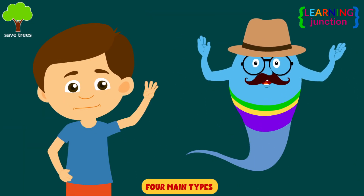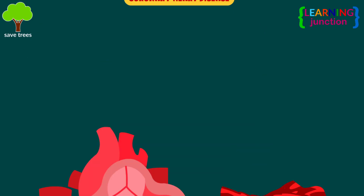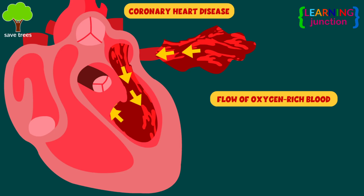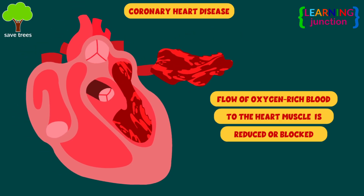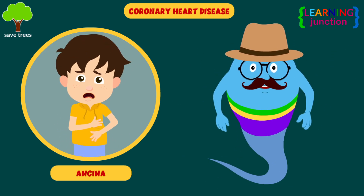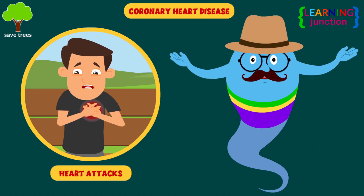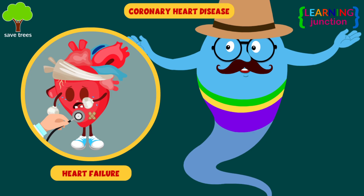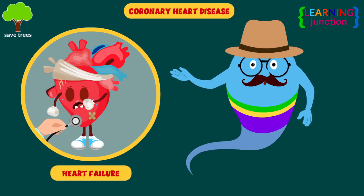There are four main types of heart disease, let's learn about them one by one. Coronary heart disease occurs when the flow of oxygen-rich blood to the heart muscle is reduced or blocked. This can lead to angina, a chest pain caused by restricted blood flow to the heart muscle, heart attacks, which occur when the blood flow to the heart muscle is suddenly blocked, and heart failure, where the heart is unable to pump blood around the body properly.